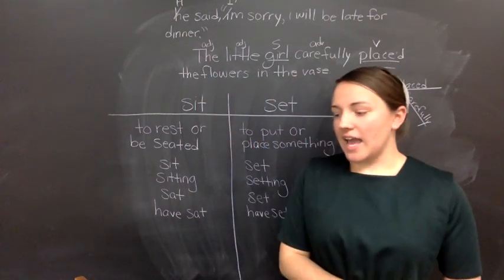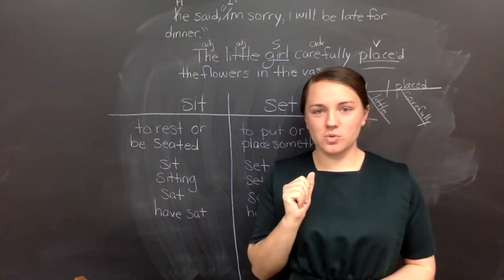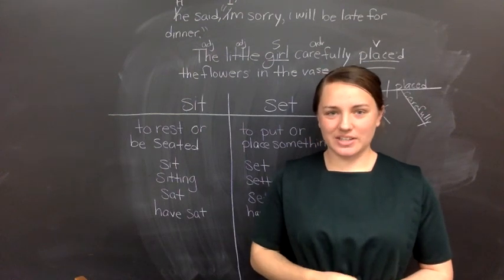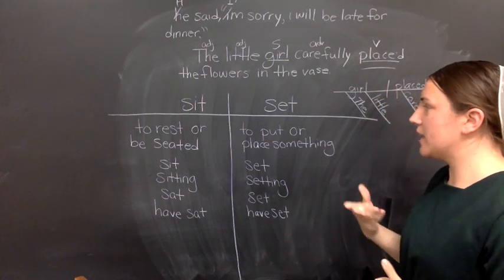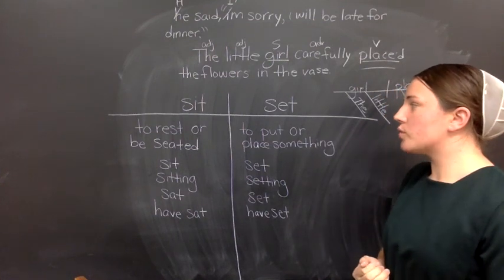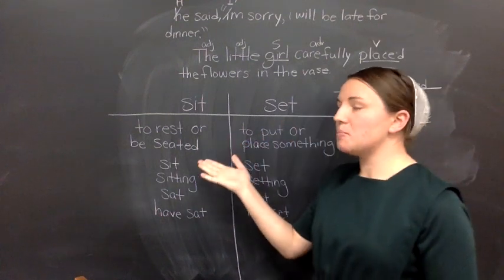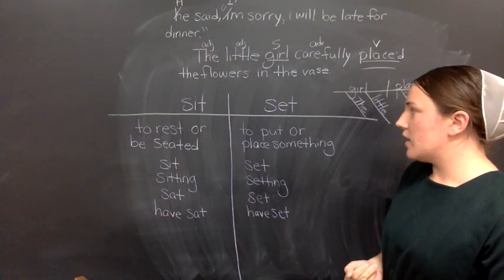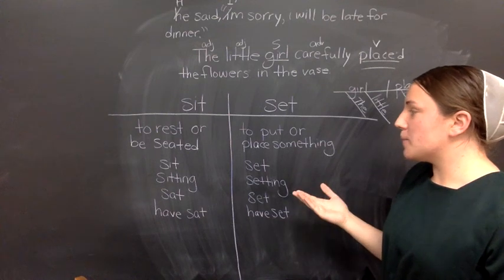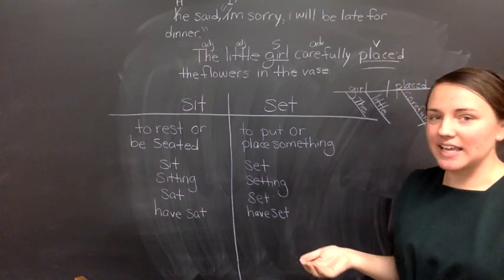In our lesson today, we are talking about how to use sit and set correctly. Now, I have a chart here that shows the meaning of them. So, first of all, the word sit means to rest or be seated. The word set means to put or place something.